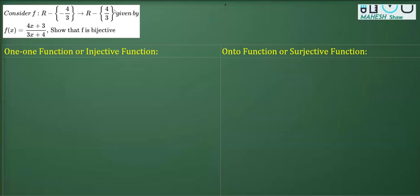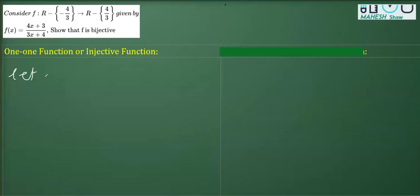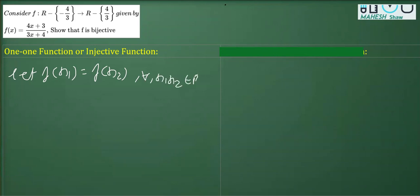Let's begin with the first part where I'm going to prove this function is one-one. In order to prove this function as one-one, what we are going to do is consider: let f(x₁) = f(x₂), where x₁, x₂ belong to all real numbers except the element −4/3.